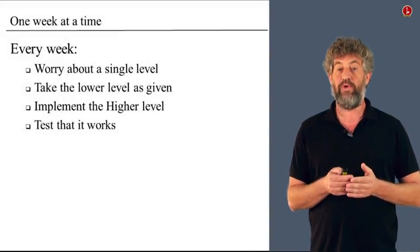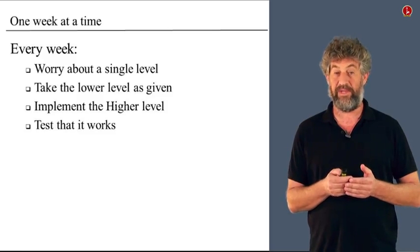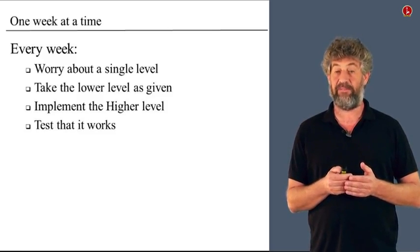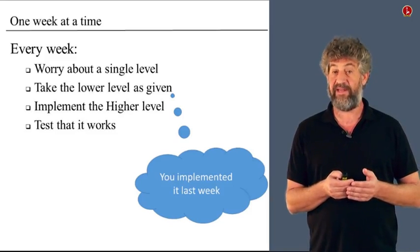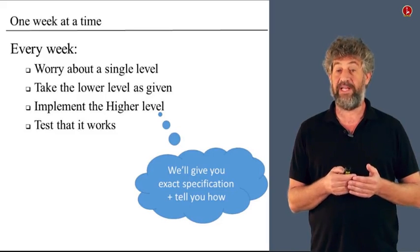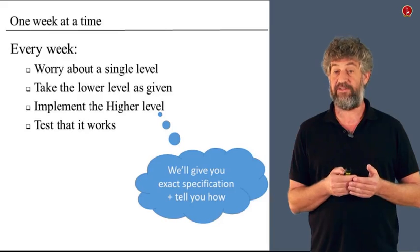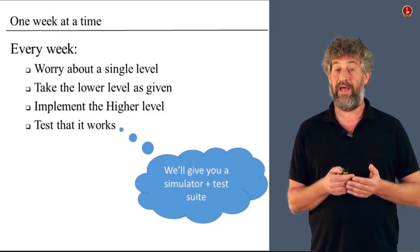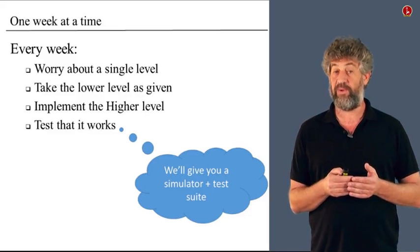Every week, we will worry about a single level of abstraction. We take the lower level as given. We only remember what it does. We forget how we did it. We implement the higher level of abstraction, the next level of abstraction. We test that it works. And then, presto, we finish the week. We can move to the next week where we already know that this level works very well. So the lower level we can take as given in the next week, because we just finished implementing it. The next level, we are going to actually guide you, give you very explicit guidance, how you're going to implement the next level of abstraction, given the fact that you already have the previous one. And then we also give you a testing suite that allows you to really test that what you did this week works, so that you can be sure that next week, everything will keep on functioning.